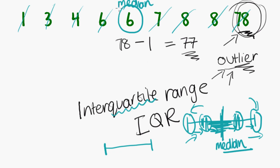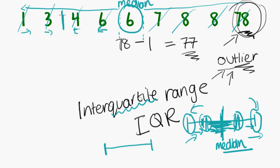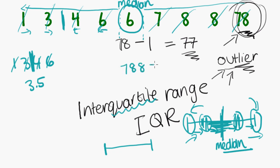Now we draw a dotted line either side of the median and say here's a new data set for each side. I want to find the median either side. For the lower half — the data one, three, four, six — crossing from each end, it's halfway between three and four, which is three and a half. For the upper half — seven, eight, eight, 78 — crossing from each end, halfway between eight and eight is just eight. So I've broken the data into four quarters and found Q1 is three and a half and Q3 is eight.